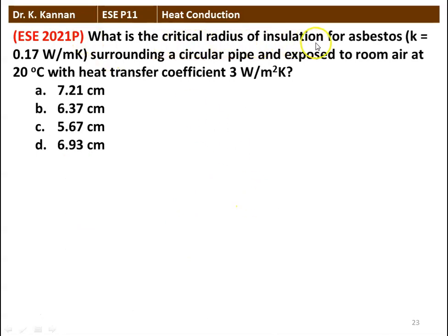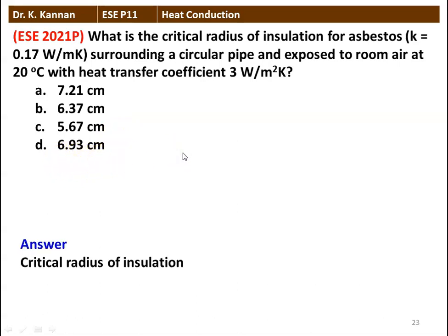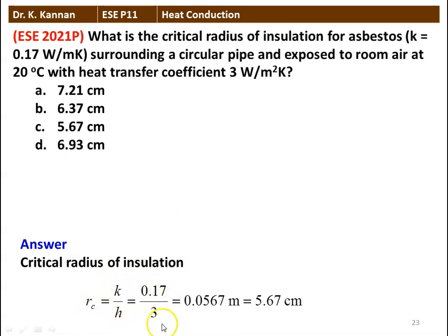Next question: what is the critical radius of insulation of asbestos with thermal conductivity 0.17 watts per meter Kelvin surrounding a circular pipe, exposed to room air at 20 degree Celsius with a heat transfer coefficient of 3 watts per meter square Kelvin? The options are: (A) 7.25 cm, (B) 7.21 cm, (C) 6.37 cm, (D) 5.67 cm, (E) 6.93 cm. We calculate: RC = K / H = 0.17 / 3 = 0.0567 meter = 5.67 centimeter. The answer is 5.67 centimeter.